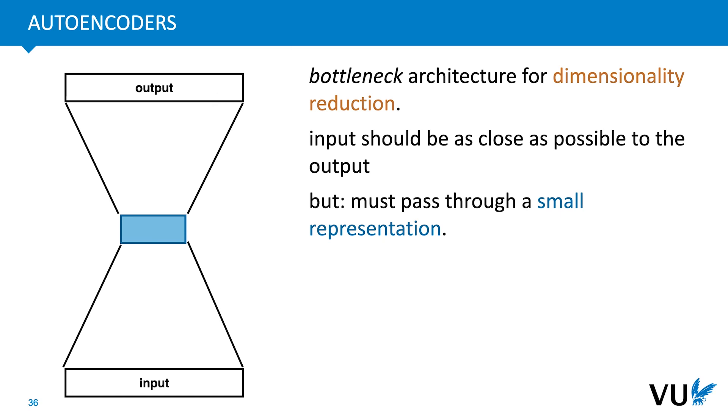The idea is that we simply train the neural network to reconstruct the input. If we manage to train a network that does this successfully, then we know that whatever value the bottleneck layer takes for a particular input is a low dimensional representation of that input, from which we can pretty well decode what the input was. So, it must contain the relevant details.